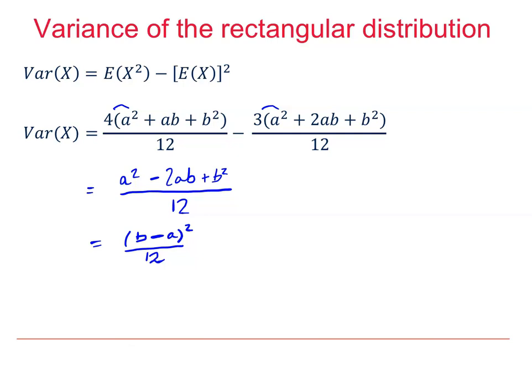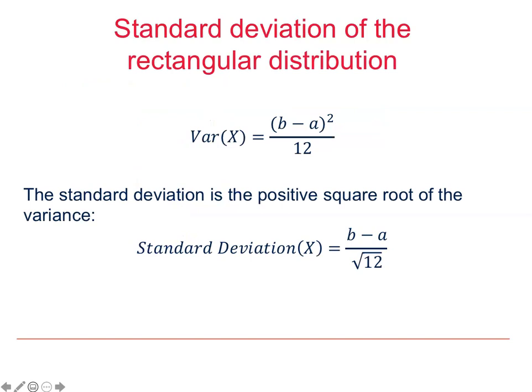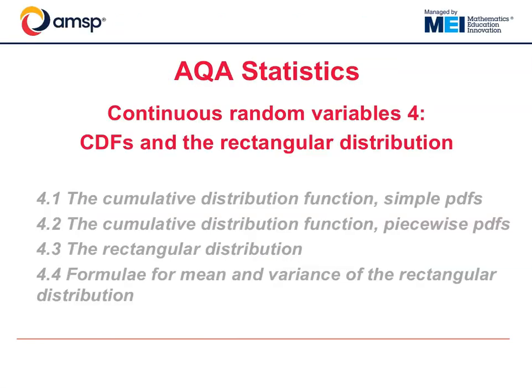This is the formula for the variance of the rectangular distribution. The standard deviation of the rectangular distribution can be found by taking the positive square root of the variance. So we have B minus A divided by root 12. And that completes our work on continuous random variables 4.